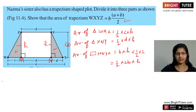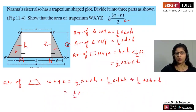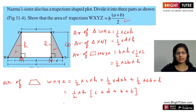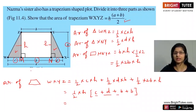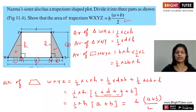We add all of them to find the area of the trapezium. Area of trapezium WXYZ equals half into C into H, plus half into D into H, plus half into 2B into H. Half and H are common, so we are left with C plus D plus 2B, writing 2B as B plus B. C plus B plus D gives us A, so we can write half into H into A plus B, which equals H(A+B) upon 2.